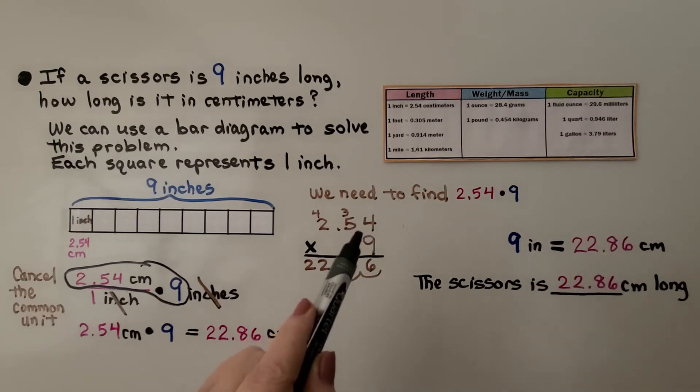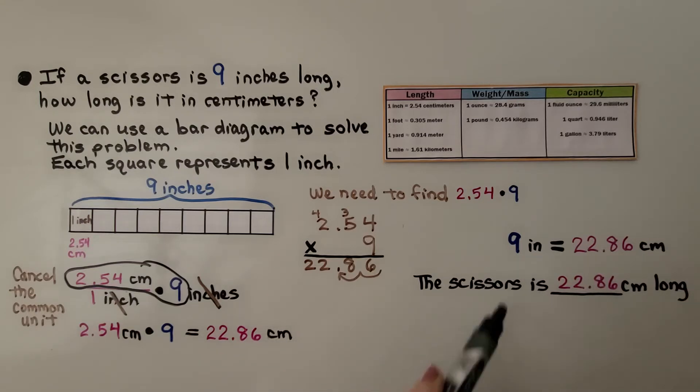We have 2 jumps in the equation, so there's going to be 2 jumps in the product. We know that 9 inches is equal to 22.86 centimeters, and that's how long the scissors is in centimeters.